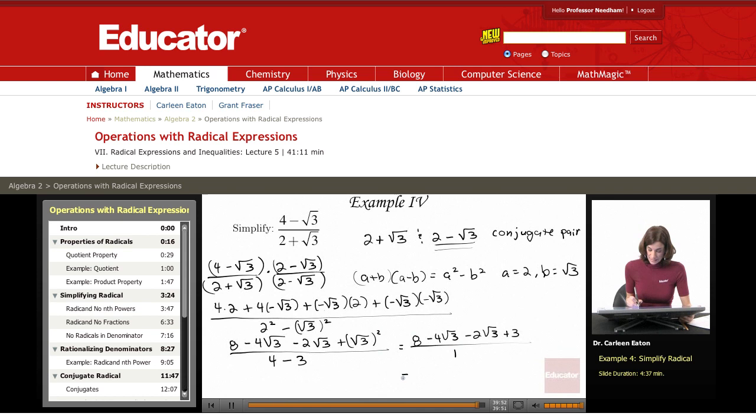So I can just not write that 1. And here I have 8 plus 3, that's 11. I also see that I have negative 4 radical 3 and negative 2 radical 3. Since these have the same index and the same radicand, I can combine these two to get negative 6 radical 3.